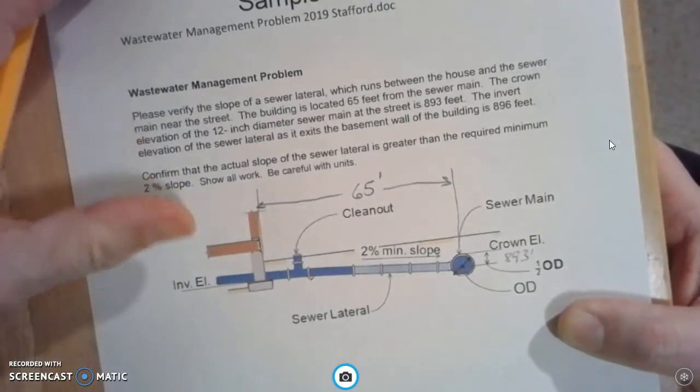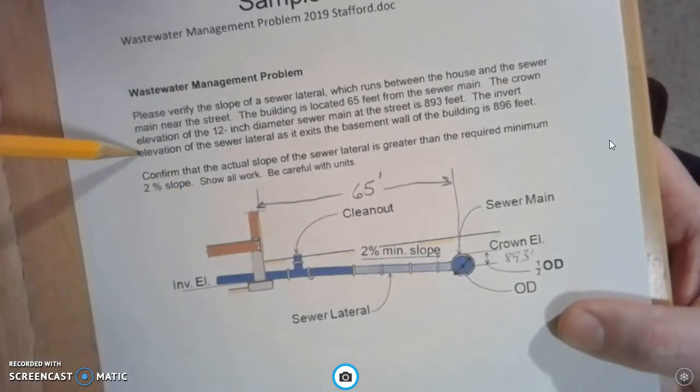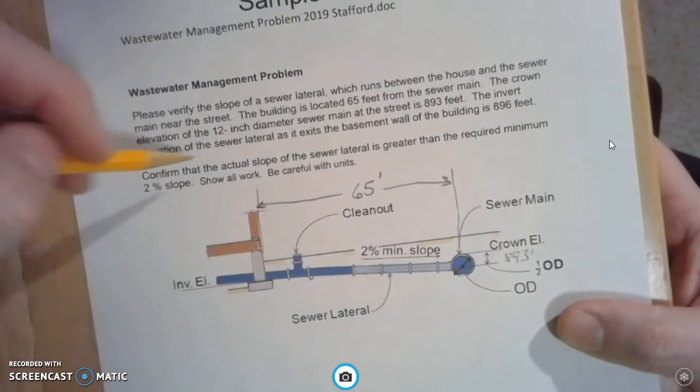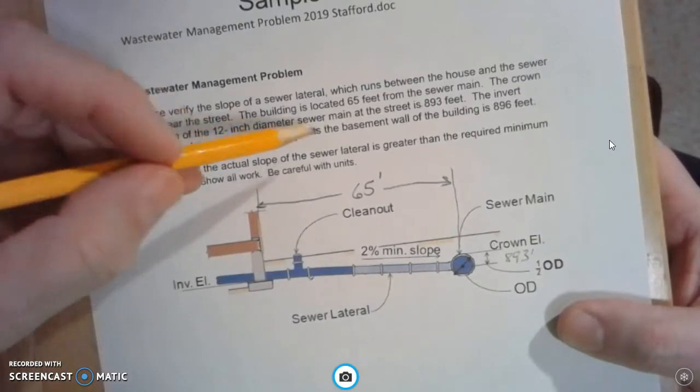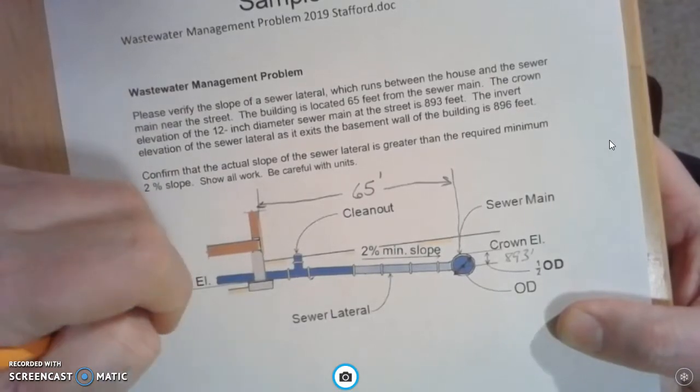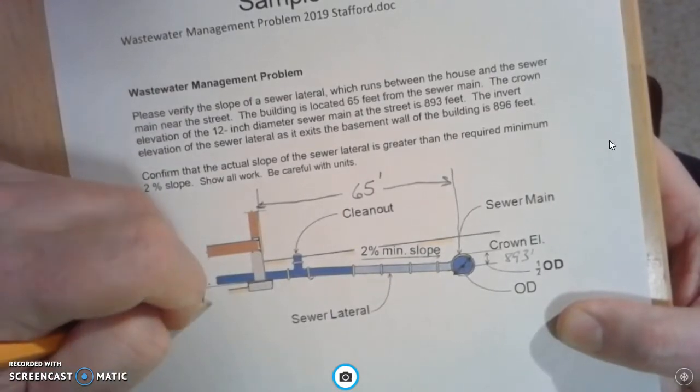The invert elevation, and don't forget the invert elevation just means the bottom of the pipe, where it comes out the basement wall is 896 feet. So I'm going to write 896 feet over here.